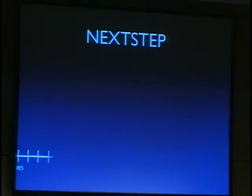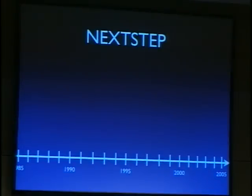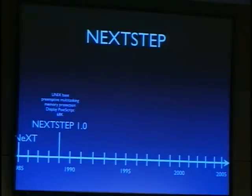Let's look at the history of the NeXTSTEP operating system. NeXT was founded in 1985, and NeXTSTEP 1 was quite a powerful operating system: it supported preemptive multitasking, had memory protection, a DisplayPostScript GUI, and ran on 68K hardware — definitely more advanced than the Macintosh released five years earlier. One significant release was 3.1 because NeXT opened it to other CPU architectures: i386, PA-RISC, and SPARC.